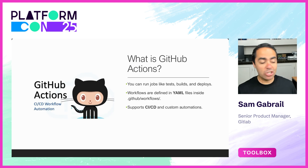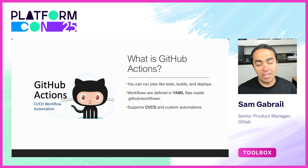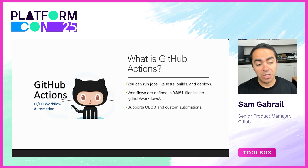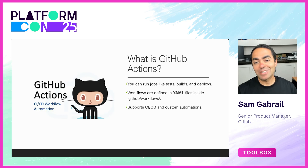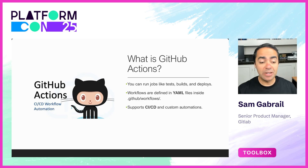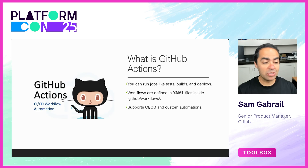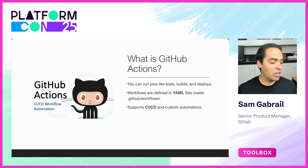GitHub Actions is a CI/CD pipeline, similar to Jenkins or GitLab. You can run jobs like tests, builds, and deploys. Workflows are defined in YAML format inside your .github/workflows folder inside your repo, and it supports CI/CD and custom automations.